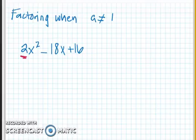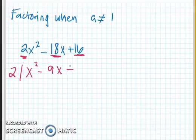This is not the case when we have a number in front, so here we have a 2. Before we do anything, we always want to look for a GCF. And in this case, I have one. If we look at all of my coefficients, I can take a 2 out of all of this. If I pull 2 out, I'm going to get x² - 9x + 8.